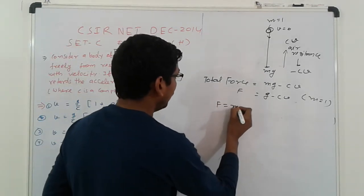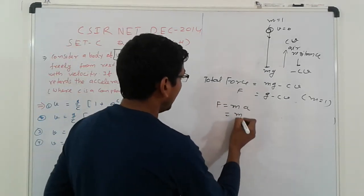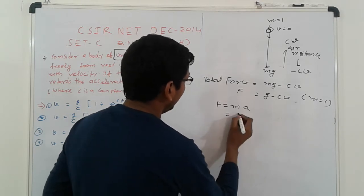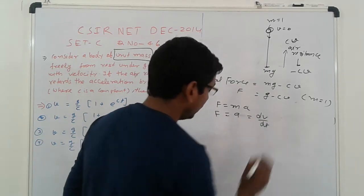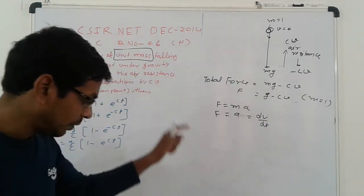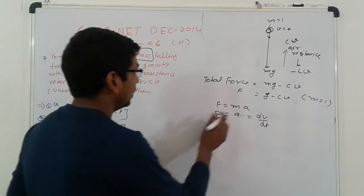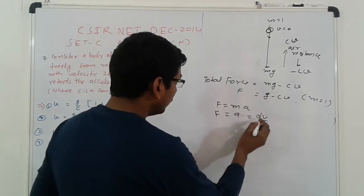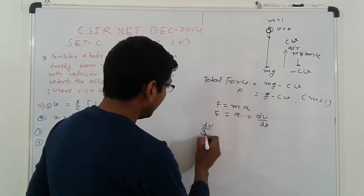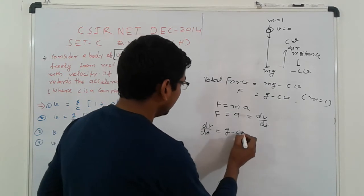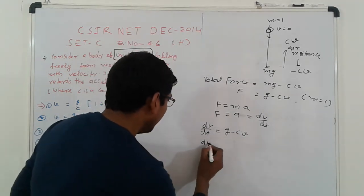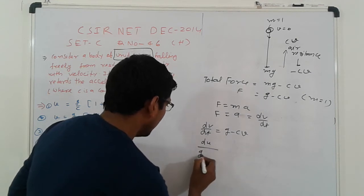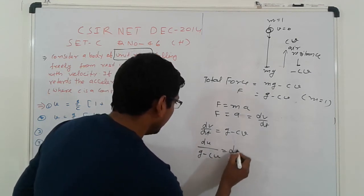Another, we know that F equal to MA. Otherwise F, A, that is here, M is 1. So which is dV upon dt. That is dV upon dt. So that is here, second's law. So dV upon dt is equal to g minus CV. So here, dV upon g minus CV is equal to dt.